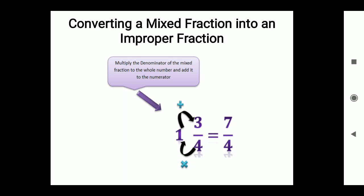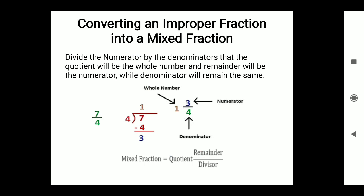Converting an improper fraction into a mixed fraction: divide the numerator by the denominator. The quotient will be the whole number and the remainder will be the new numerator, while the denominator remains the same. For example: 7 divided by 4 — 4 goes into 7 once, 7 minus 4 equals 3. So the mixed fraction is 1 and 3/4, which equals quotient and remainder upon divisor.